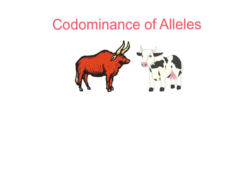Hello, everyone. In this video, I'm going to be talking about the co-dominance of alleles. Now, in a heterozygous organism — in the videos I've talked about previously — we tend to think of those with an allele that's dominant and one that's recessive, and they express the dominant phenotype. With the co-dominance allele pattern, what we see is that both alleles in that heterozygous organism actually contribute to the phenotype. Both are expressed equally and independently.